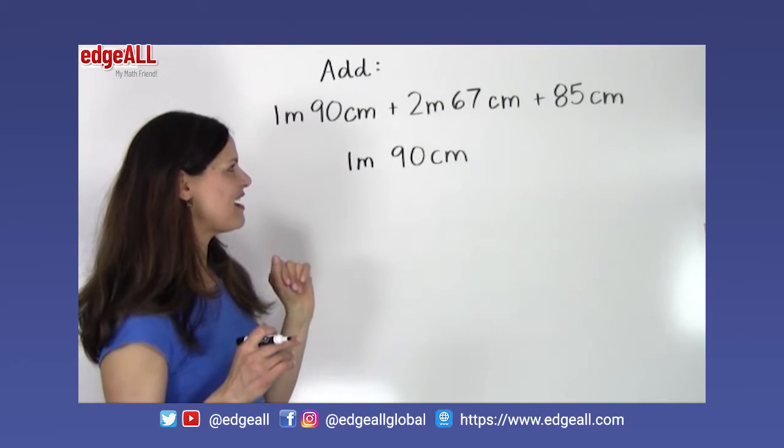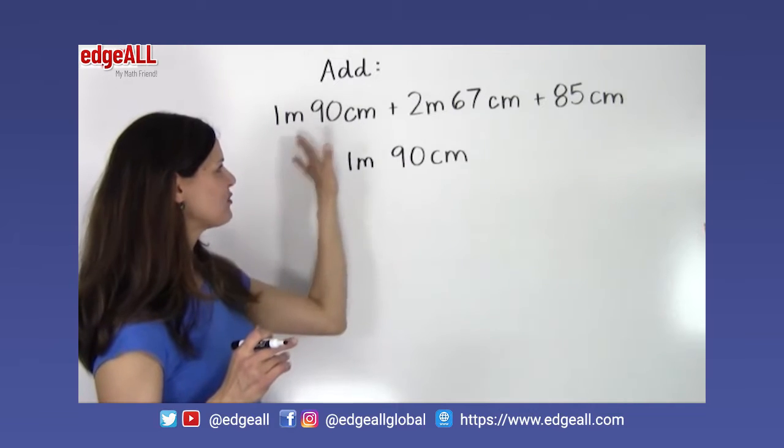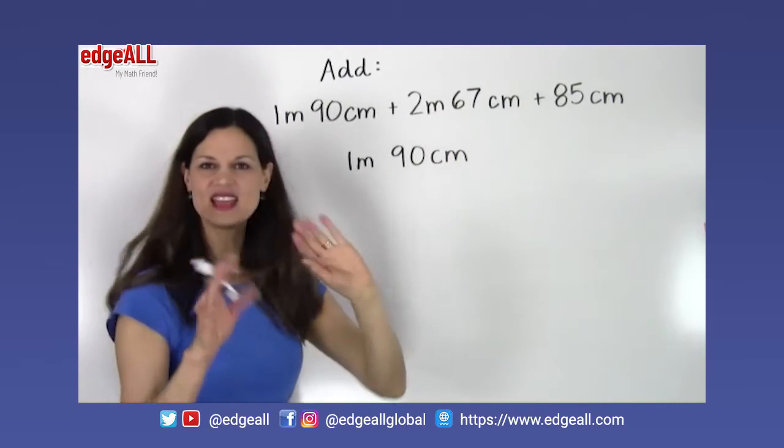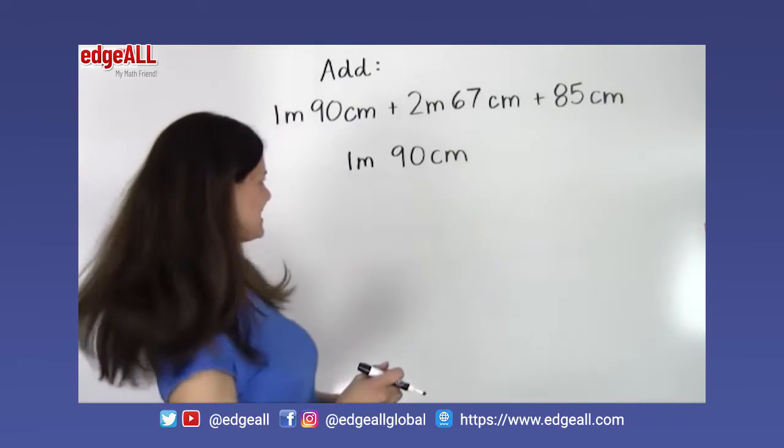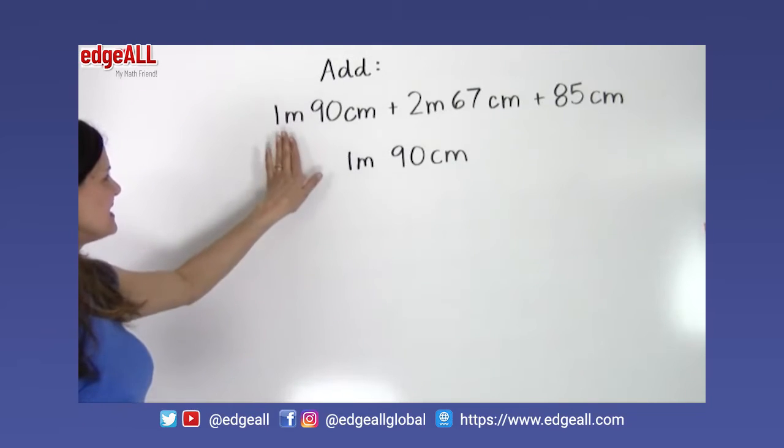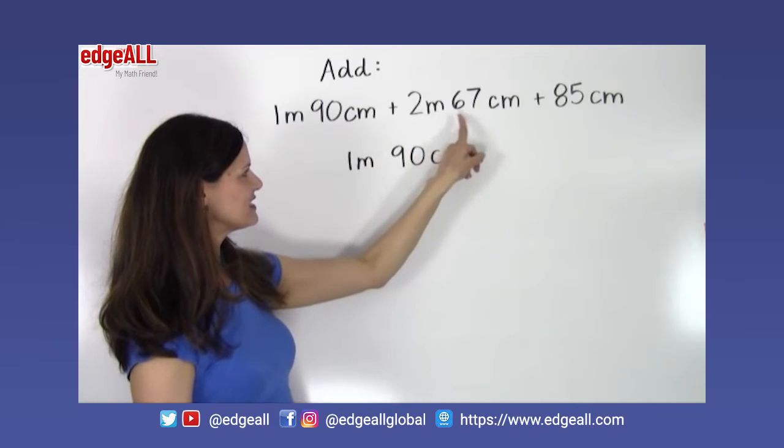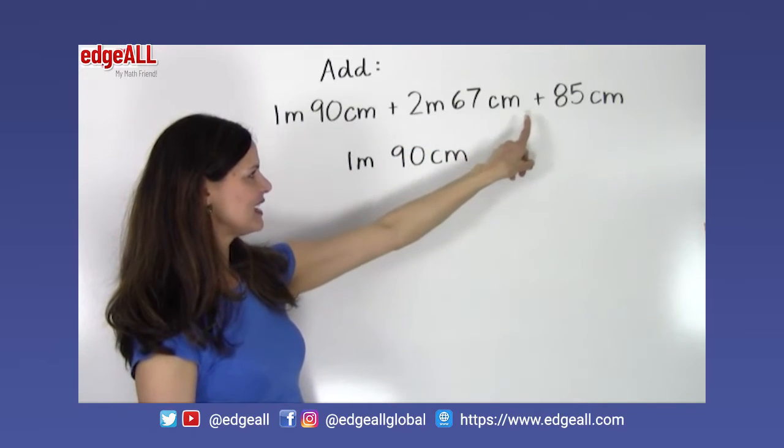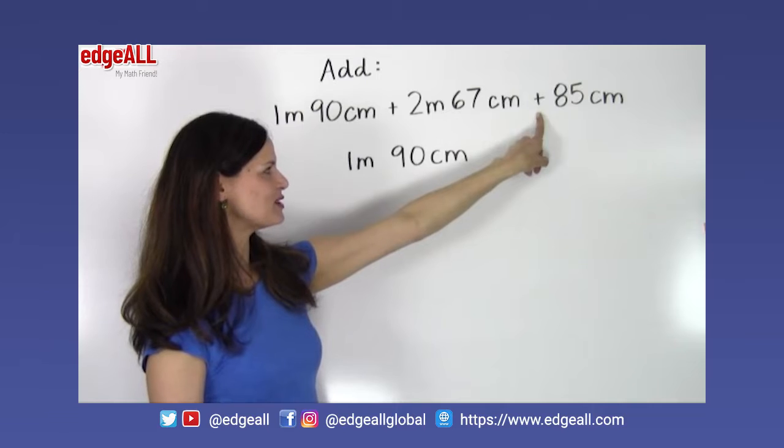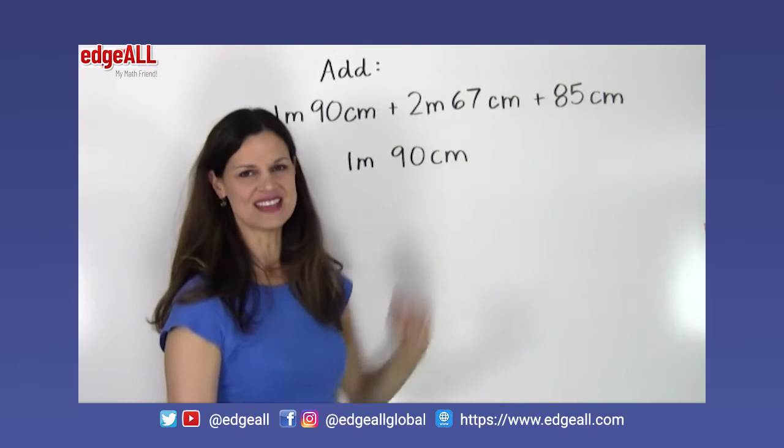Let's look at an example of adding together three different measurements that use some mixed units. So we're asked to add 1 meter 90 centimeters plus 2 meters 67 centimeters and then plus a smaller measurement of just 85 centimeters.